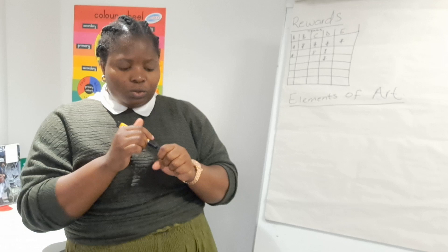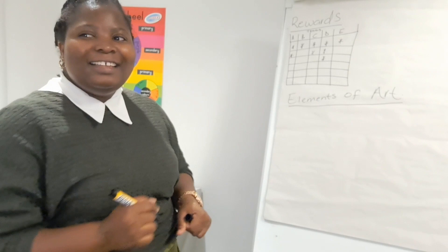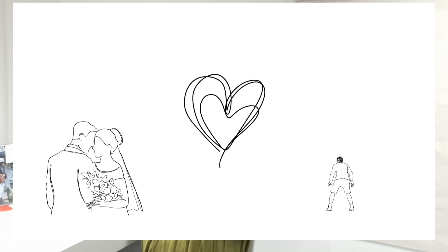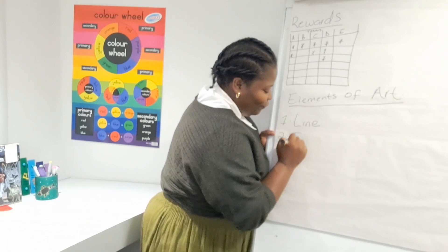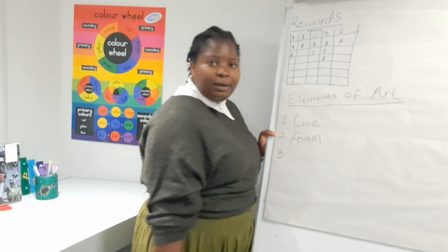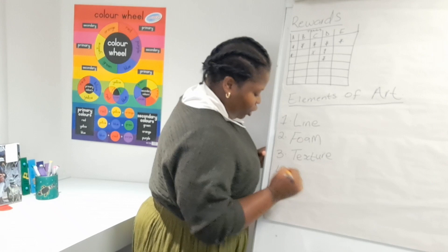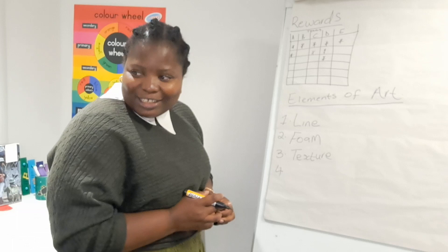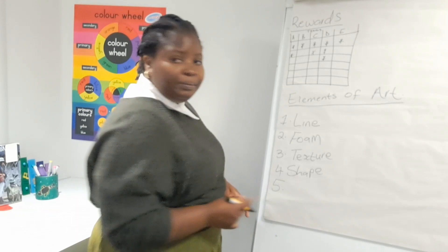Now, who still remembers the Elements of Art? I think we had about five. What are the Elements of Art? Anyone? Good — number one is Line. Good job, Paul. Number two — Lisa — Form. Well done. Number three — Texture. You guys are so brilliant. Number four — we have Triangle... Square... Shapes. Yes, Shape as an element of art.